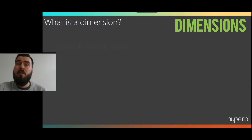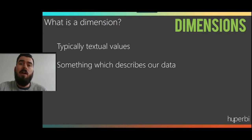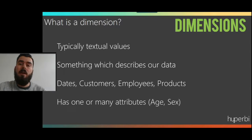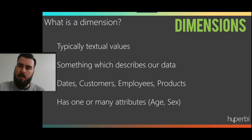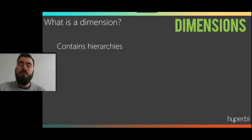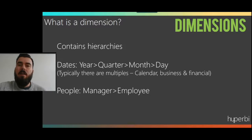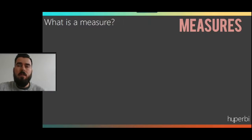A dimension — typically our textual values — is something which describes our data and adds context to it. These are typically dates, customers, employees, products. If this was in Excel, it may be something that you'd pull in as a slicer, how you're actually slicing your data down. Generally these dimensions have many attributes: so a customer — we might be interested in their age, their sex, their name, their address — all these sorts of attributes that further describe what our customer is. Dimensions typically contain our hierarchies: date hierarchies, parent-child hierarchies, and our products, and that sort of thing.